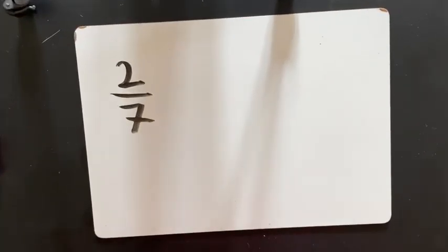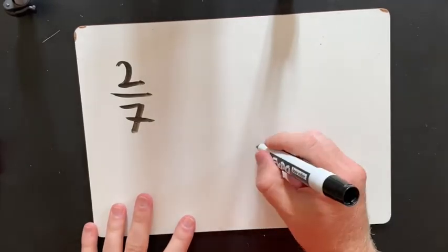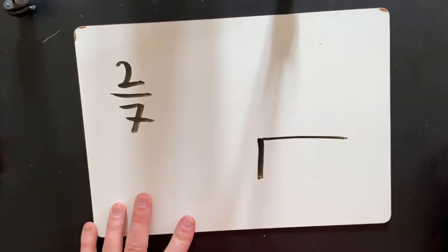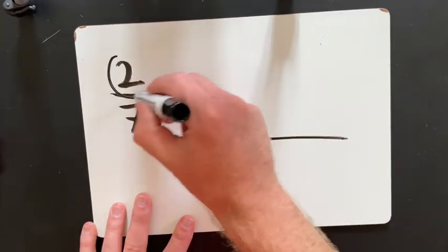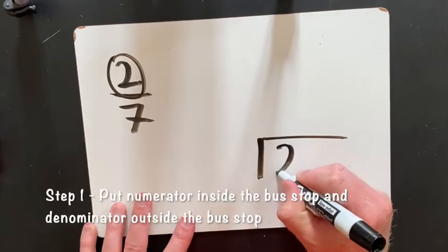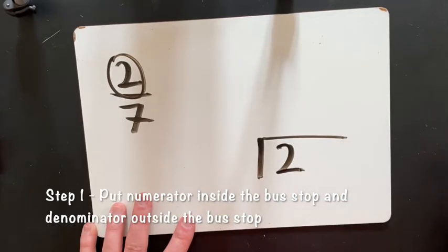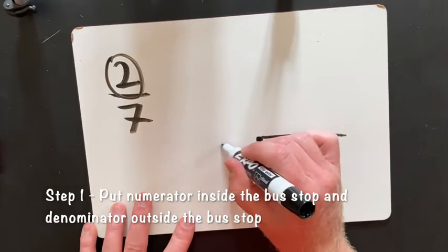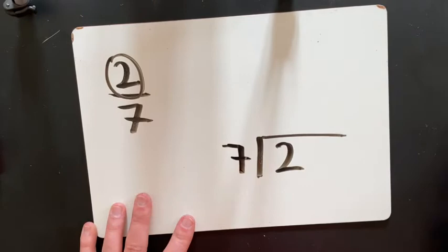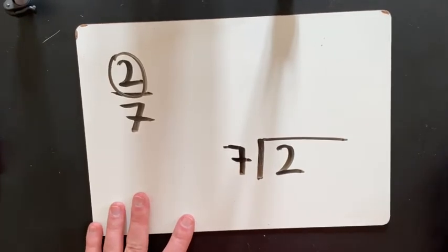So to convert a fraction to a decimal, you need to use short division to do this. So I'm going to put a short division bus stop. Then the numerator goes inside of the bus stop and the 7 goes on the outside of the bus stop. Then it's just a simple short division question.